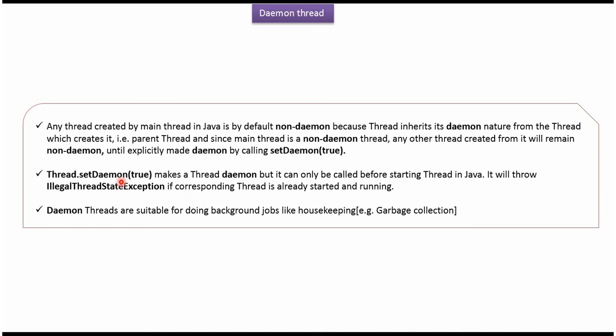Using the setDaemon() method, we can make a thread a daemon thread. In setDaemon(), we have to pass true if we want to make a thread a daemon thread. We have to call this method before starting the thread. If you call setDaemon() after starting the thread, then we will get an IllegalThreadStateException.